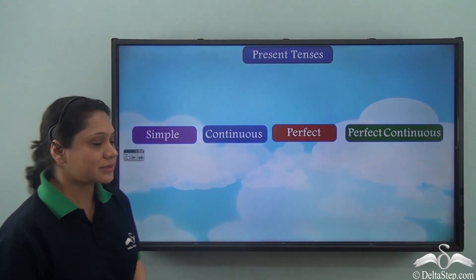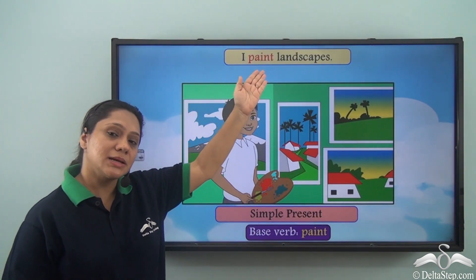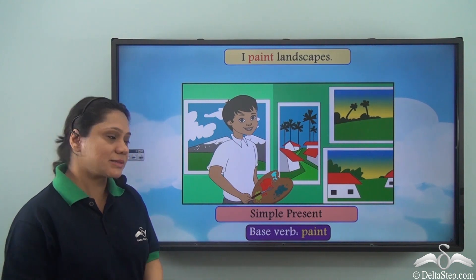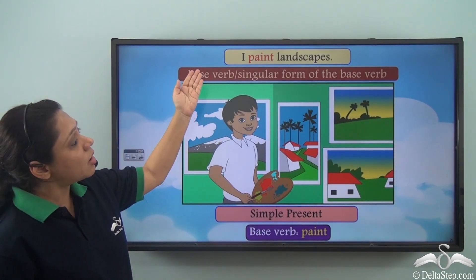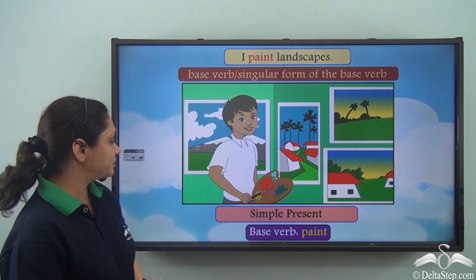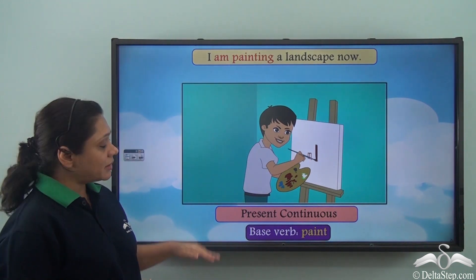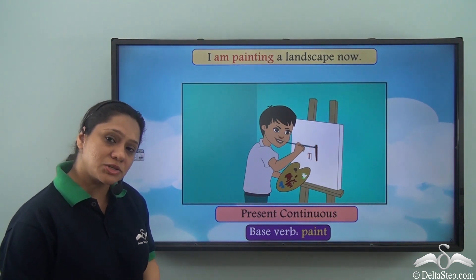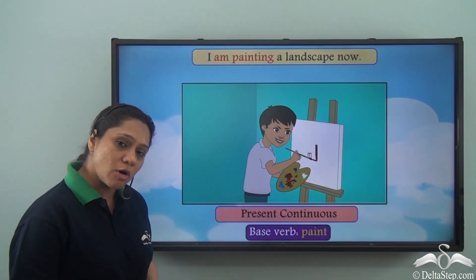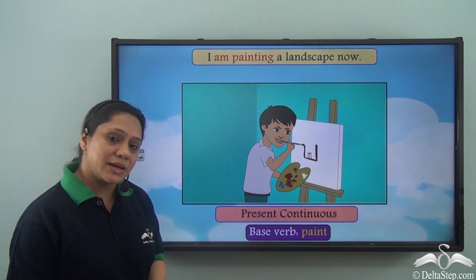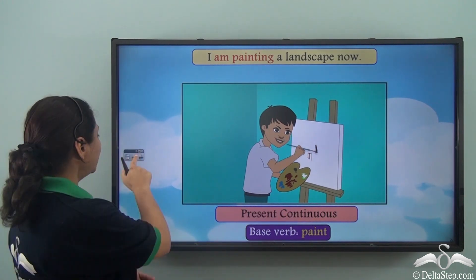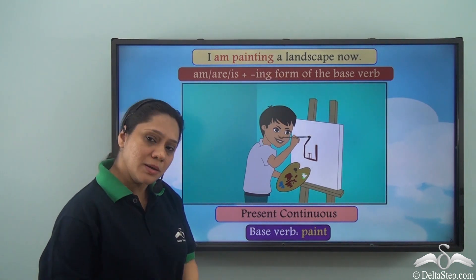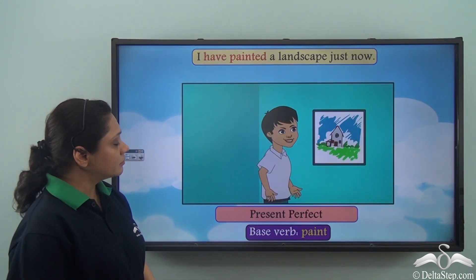"I paint landscapes" is a general statement or a fact, and so it is in the simple present tense. The verb is either the base verb or the singular form of the base verb in this tense. In the present continuous tense, we say "I am painting a landscape now," showing an action which is in progress at the present moment. The verb is formed using am, are, or is depending upon the subject, and the -ing form of the base verb.